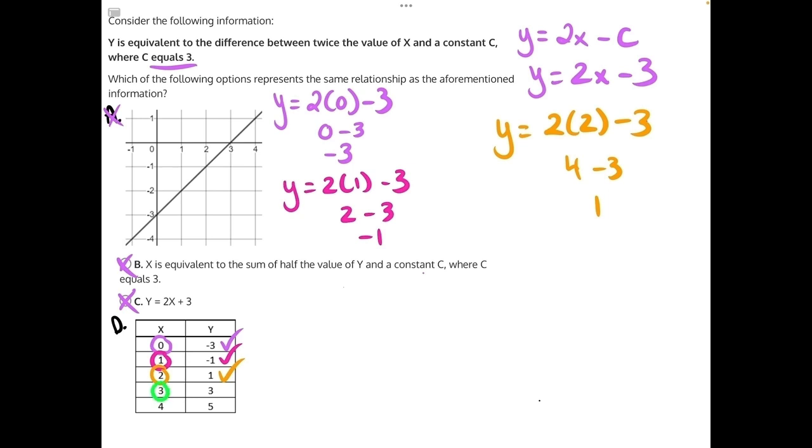Then we'll have 3. y is equal to 2 times 3 minus 3. 2 times 3 is 6 minus 3 is 3, matching the table.